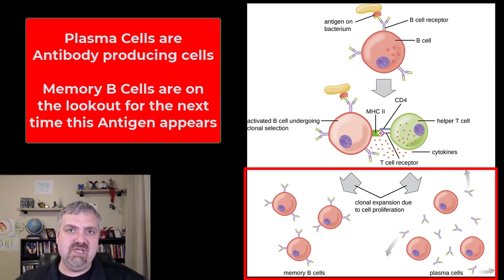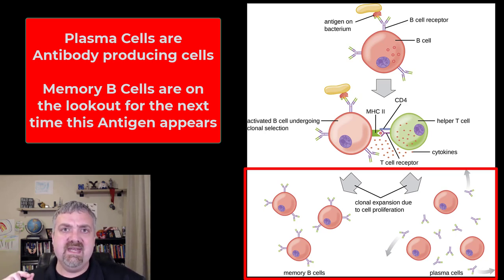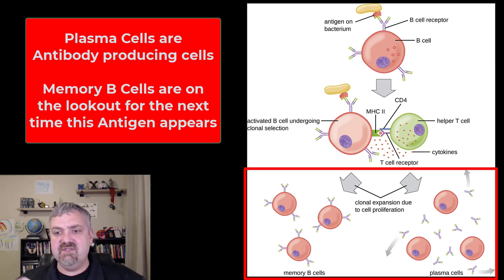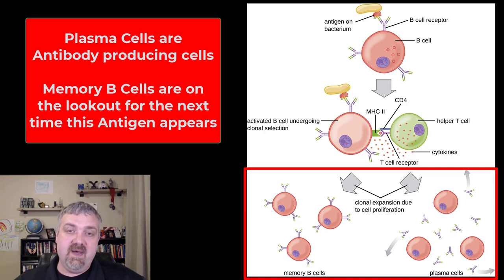Plasma cells begin by producing IgM antibodies, which is why they're the first to show up when you have an infection. But helper T cells can use chemicals to direct them to start making different antibodies — they can switch to producing IgG antibodies that are more effective, IgA antibodies used primarily on body surfaces, and IgE antibodies that play a big role in the immune response.